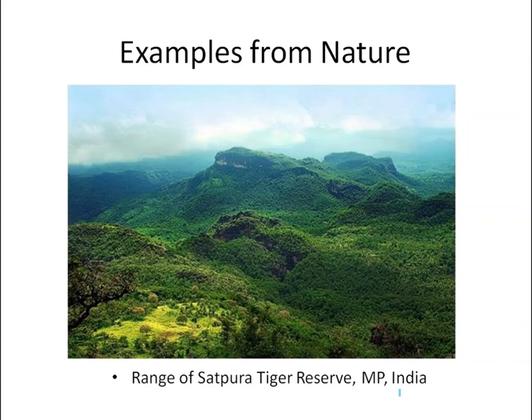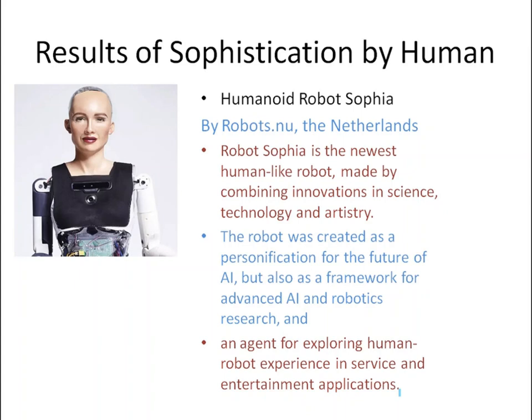Control engineers started imitating humans themselves. The example of the trapeze game, where the human mind is being copied and imitated, is relevant here. Robot Sofia is a well-known development from the Netherlands — a result of science, technology, and artistry combined together. The main purpose of developing this robot is to give services to humans and also for entertainment applications.